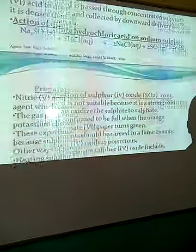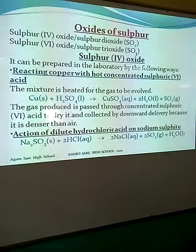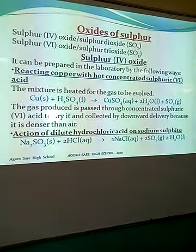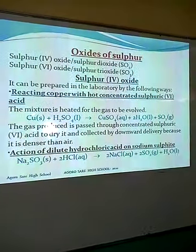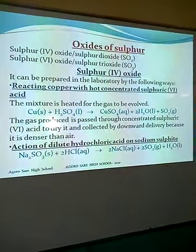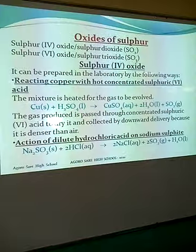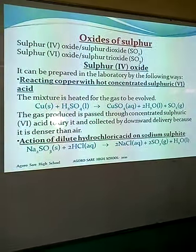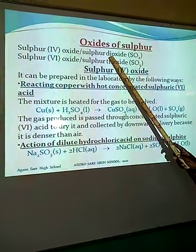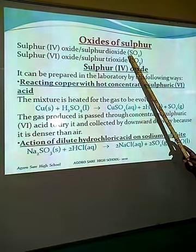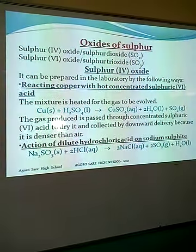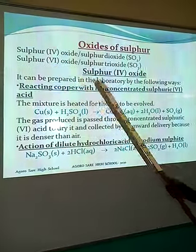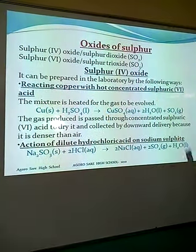We are going to move to the next area: the oxides of sulfur. Sulfur generally has two oxides — sulfur dioxide, whose formula is SO₂, and sulfur trioxide, which is SO₃.